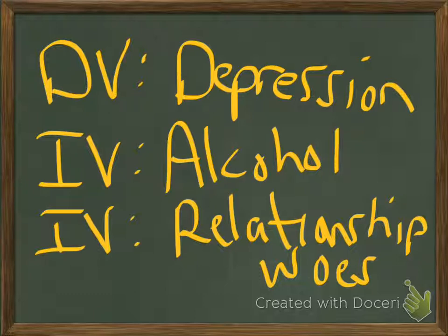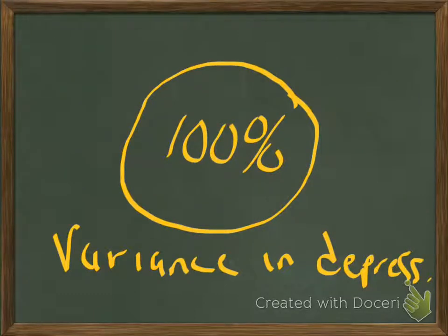One independent variable is alcohol — how much alcohol a person drinks. The other one is relationship woes — how happy or depressed somebody is in their personal relationships. What we're doing in a multiple regression is taking the dependent variable and trying to see how much of the variance in the dependent variable is going to be explained by the independent variables. People's scores on this depression scale are going to differ from each other and from the average.